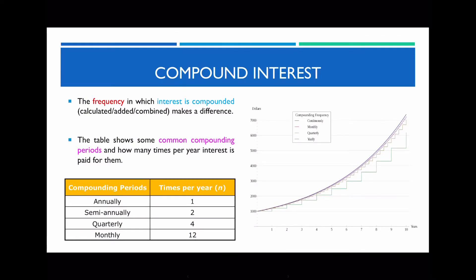The next thing I want to talk about is compounding frequency — how many times you're actually going to be earning interest within a year. The frequency in which interest is compounded will make a huge difference. Common compounding frequencies are: annually (once per year), semi-annually or bi-annually (twice per year), quarterly (four times), monthly (12 times), as well as weekly and daily.